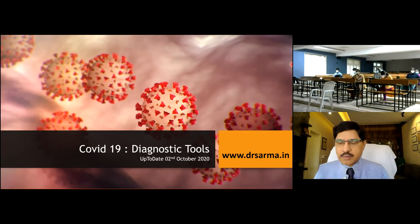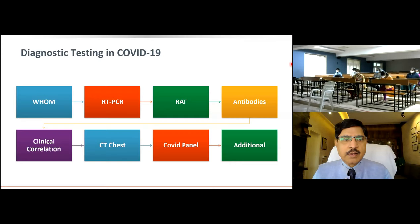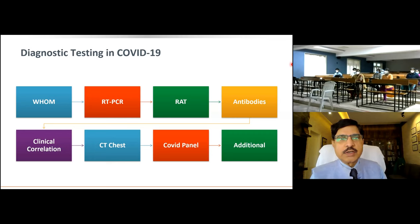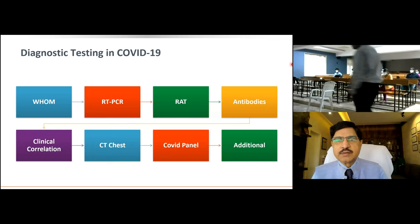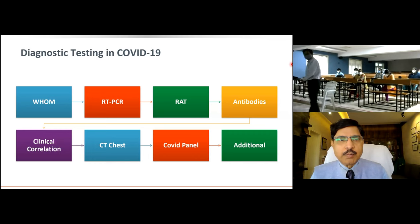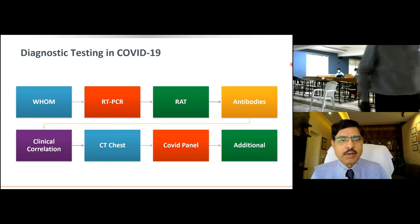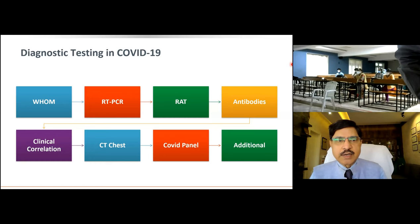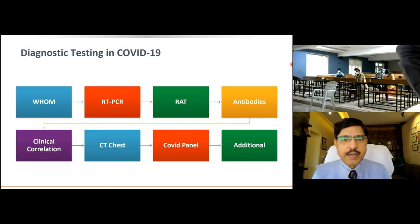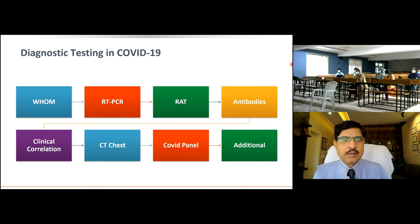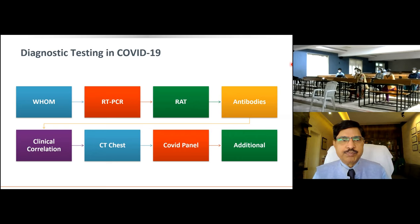This is the floor plan for diagnostic testing on COVID: whom to test, about RT-PCR, rapid antigen test, antibodies, clinical correlation, CT chest as a diagnostic tool, what is covered in the panel blood test, and additional information needed to trace the patient, understand the disease, and determine where and how to treat.